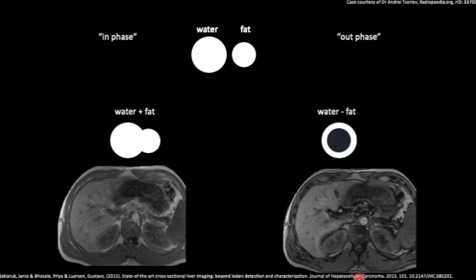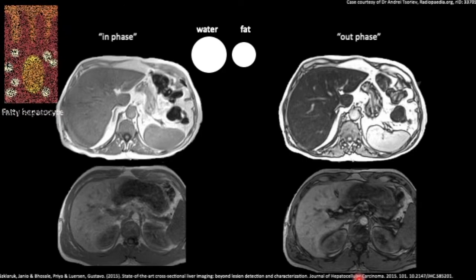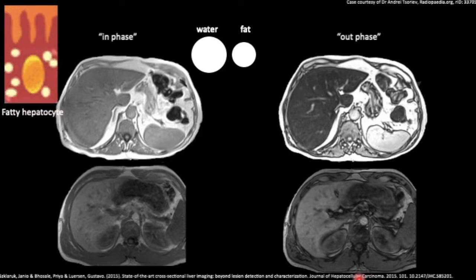Let's take a second example. In-phase here and out-phase here on the right. This time, the out-of-phase image here shows signal drop. This is because the water and fat occupied the same voxel, in this case of fatty infiltration.